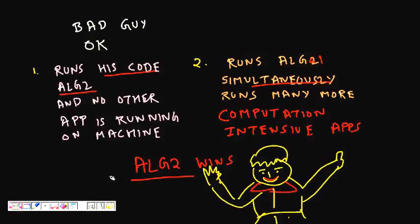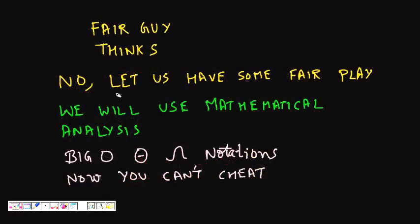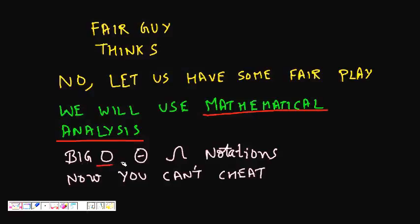The fair guy says this is not fair either. So we need mathematical analysis — an approach that is not dependent on hardware or running conditions. Whatever your algorithm does, we will capture it using mathematical analysis. That is why interviewers ask for time complexity, and that is where Big O, Theta, and Omega notations come in.